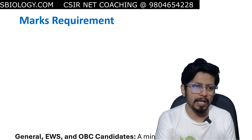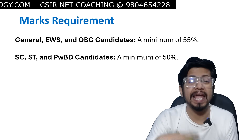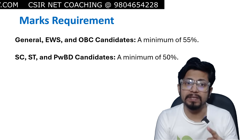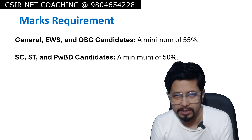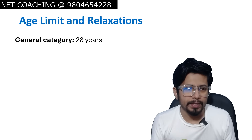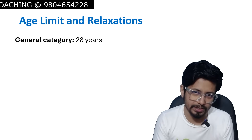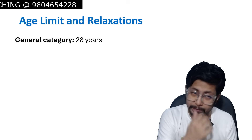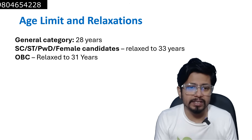Regarding marks requirements: for general, EWS, and OBC categories, the minimum marks requirement is 55% to be eligible for the examination. For SC, ST, and PWD categories, the minimum is also 55%. On age limits: for general category male candidates, the age limit is 28 years. There is a 5-year relaxation for SC, ST, PWD, and female candidates, giving a relaxed age of 33 years. OBC non-creamy layer candidates get a 3-year relaxation, with the age limit at 31 years.